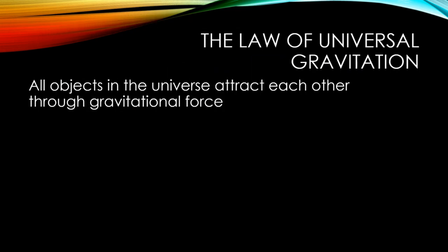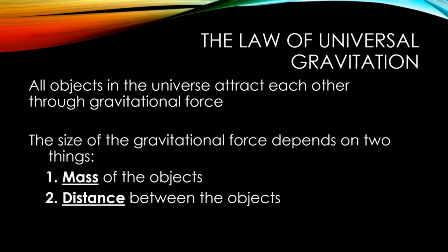Newton used these observations to develop his law of universal gravitation. This law states that all objects in the universe attract each other through gravitational force. Like we just mentioned, this does not mean that all the objects in space are flying towards one another. The strength of the gravitational attraction between two objects depends on two things. It depends on the mass of the objects involved, and it depends on how far apart those two objects are.